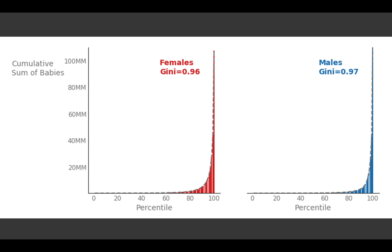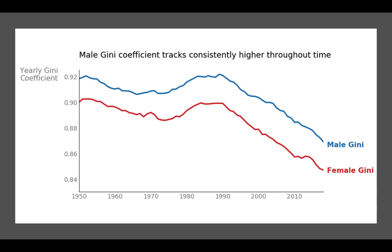We can also do this for every single year. Taking each year of the data, tallying up the total number of babies given each name by gender, and tracking that across time, we see that the Gini coefficient for males is consistently higher than females every single year. This means there is a higher amount of statistical dispersion in the male names — there are a few male names that are very popular and continue to be popular throughout time, whereas females are spread out among the different names more than males. I suspect this has to do with naming trends, such as names passed down generation after generation resulting in ultra popular names for male babies.